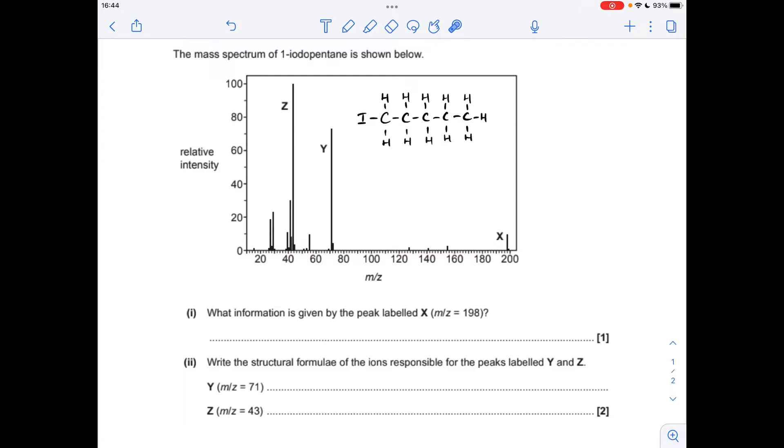So first of all, what information is given by the peak labelled X, at M over Z 198? That's the peak furthest to the right, it's the molecular ion peak. So it tells us the MR of the molecule.